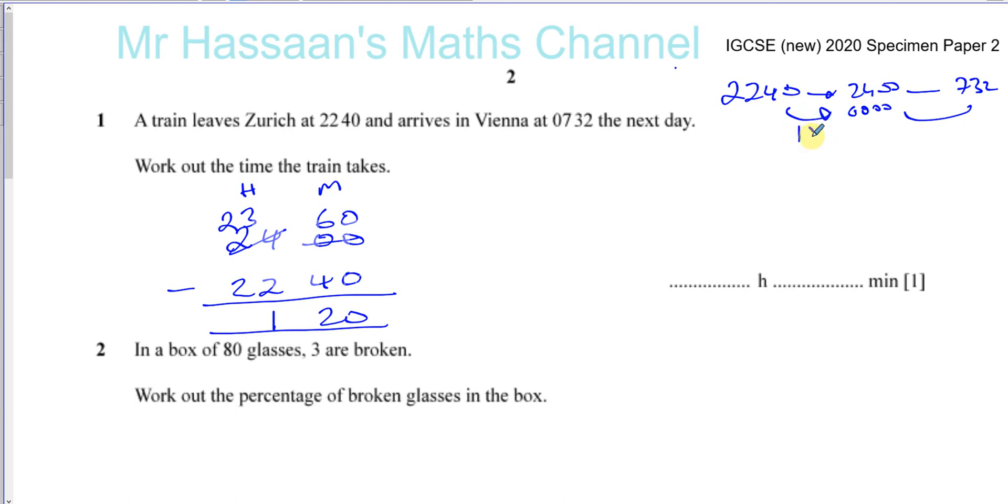We found out the time between there and there, which is one hour and 20 minutes. Now we've got to add to it seven hours and 32 minutes. So you have 1:20 plus 7:32. So that's going to give you 52 and eight. So there's eight hours and 52 minutes between those two times.